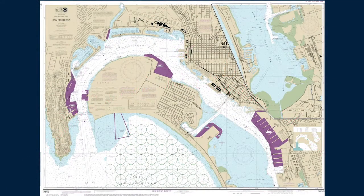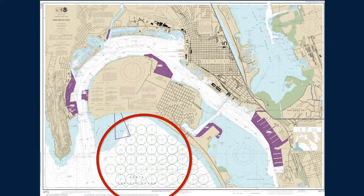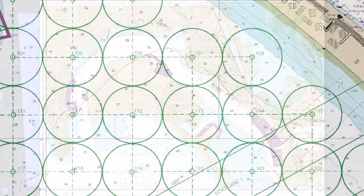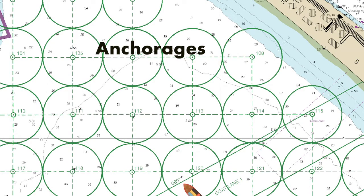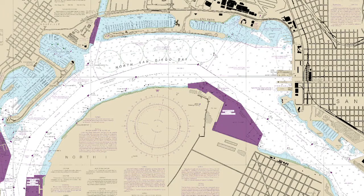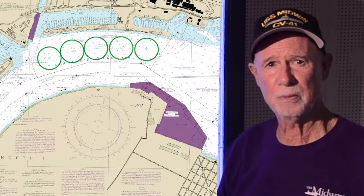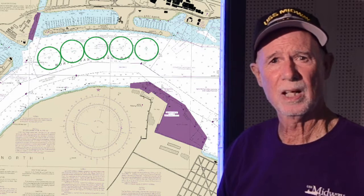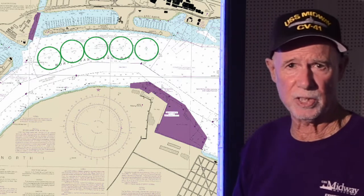Now let's look at some other symbols used on the chart. What do you think these green circles are for? These are designated anchorages where ships waiting to come into the harbor can anchor until there is space available at one of the piers. Can you find any of these circles inside the bay? That's right, there are five of them. Sometimes, when I'm on the Midway Museum, I see ships anchored at these anchorages in the bay.